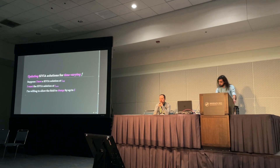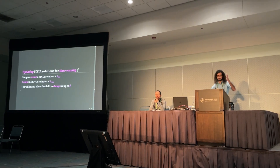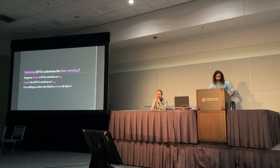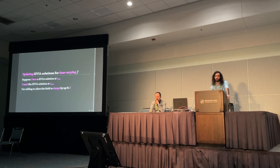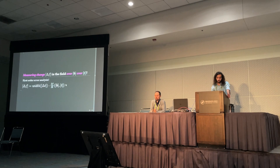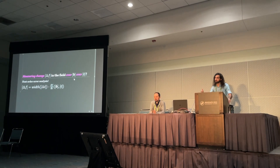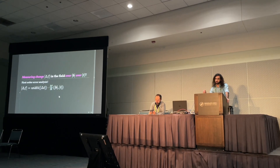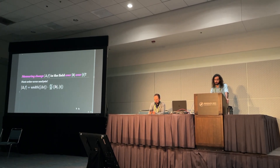So, for time-varying f, we need to update these SIVIA solutions. Suppose I have some SIVIA solution at some time t-old, and I want the SIVIA solution at some new time t-now. In between, I'm willing to allow the field to change by up to some temporal error tolerance, let's call it delta. So, how do we actually measure change in the field over a box of space over an interval of time? We just use first-order error analysis. With automatic differentiation combined with interval arithmetic, we can evaluate the time derivative of f over a box of space over an interval of time to get this measure delta-f.